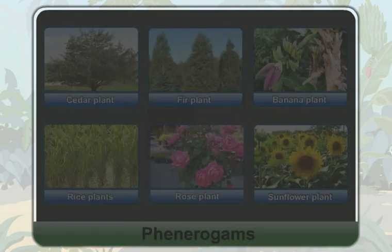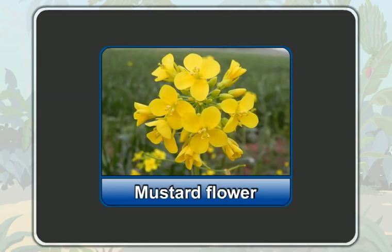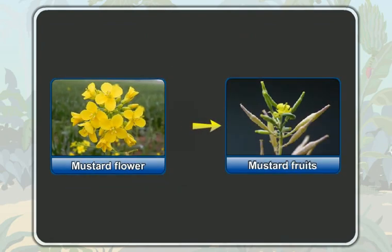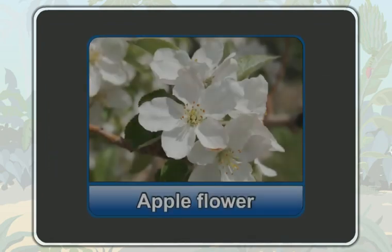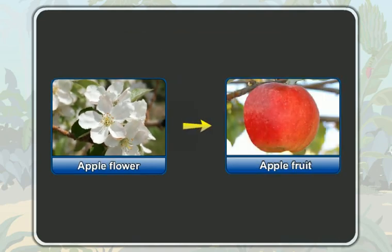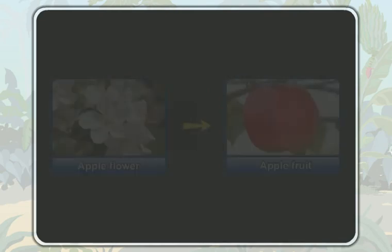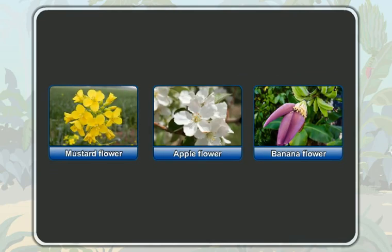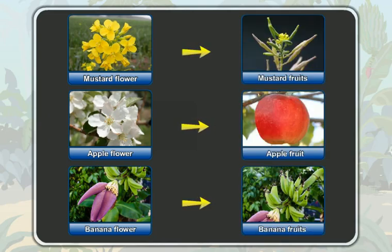This is a mustard flower. A mustard flower develops into a mustard fruit. This is an apple flower. An apple flower develops into an apple fruit. The flowers of flowering plants develop into fruits.